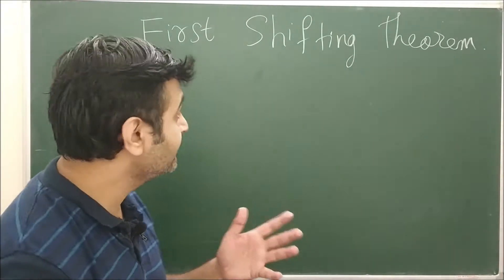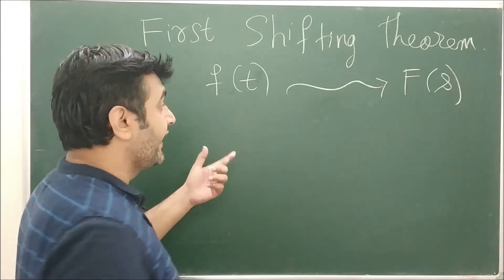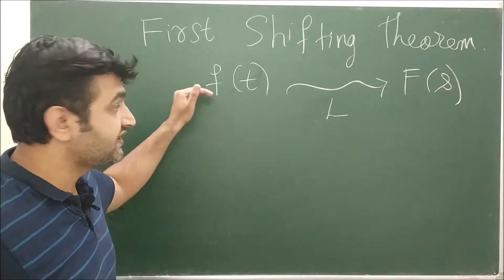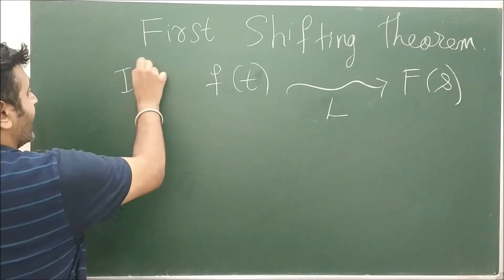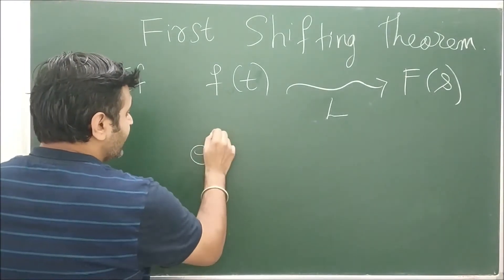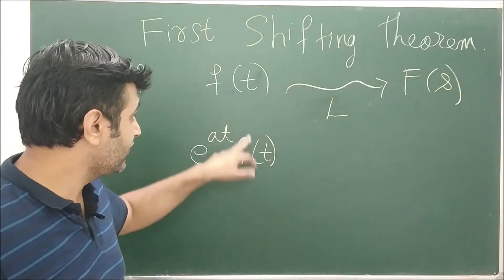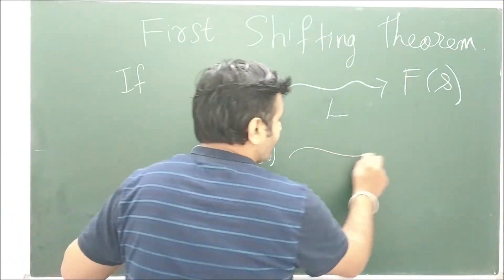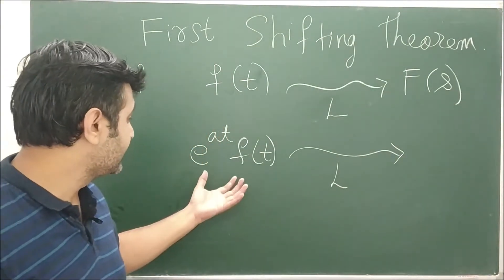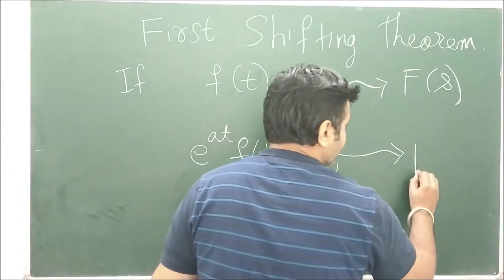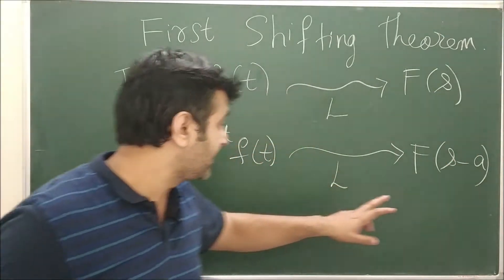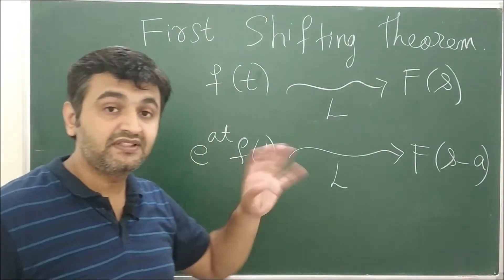So let's see what the theorem says. Suppose you have a function f(t) and you apply the Laplace operator — you get its Laplace transform. Now if you multiply your function by some exponential function, e^(at) · f(t), and apply the Laplace operator, the answer is that you simply shift your s by a units. That's why the name is shifting theorem.